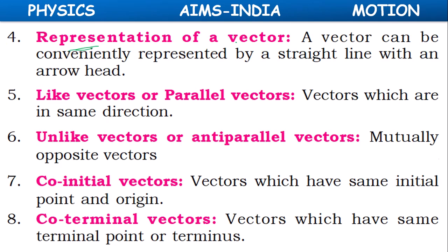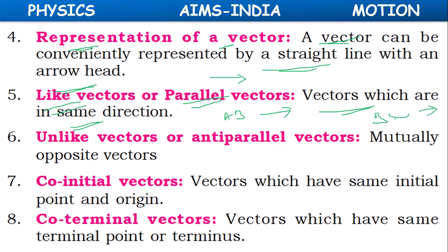Representation of a vector: a vector can be represented by a straight line with an arrowhead. Like vectors, also called parallel vectors, are vectors which are in the same direction. If AB and BC vectors point in the same direction, they are called like vectors.